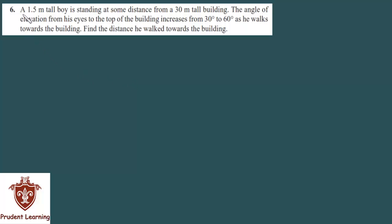Alright, let us move on to the sixth question of the exercise. The question says a 1.5 meter tall boy is standing at some distance from a 30 meter tall building. The angle of elevation from his eyes to the top of the building increases from 30 degrees to 60 degrees as he walks towards the building. Find the distance he walked towards the building.